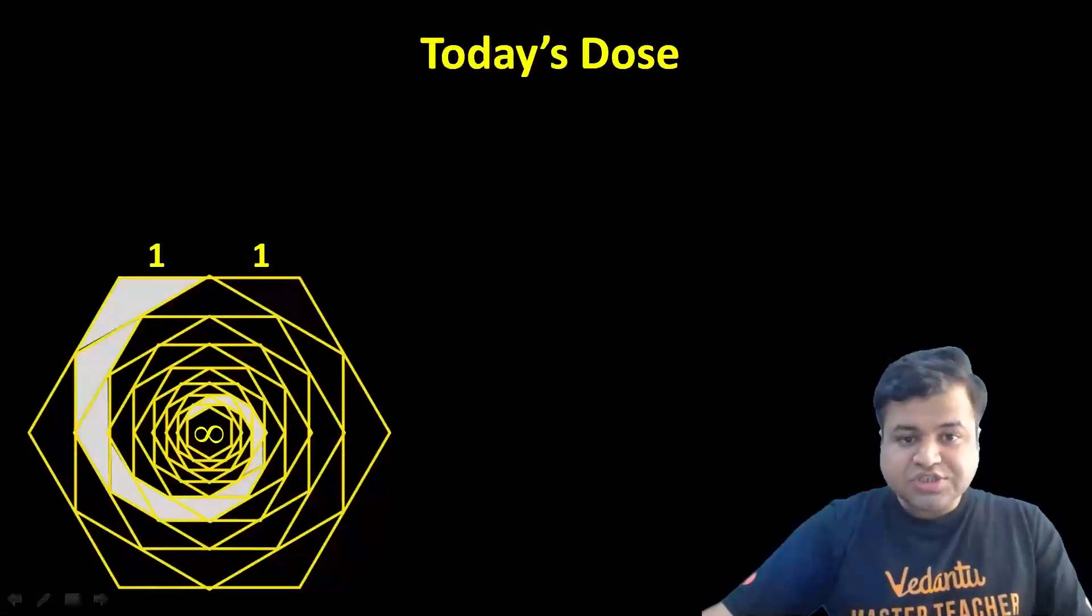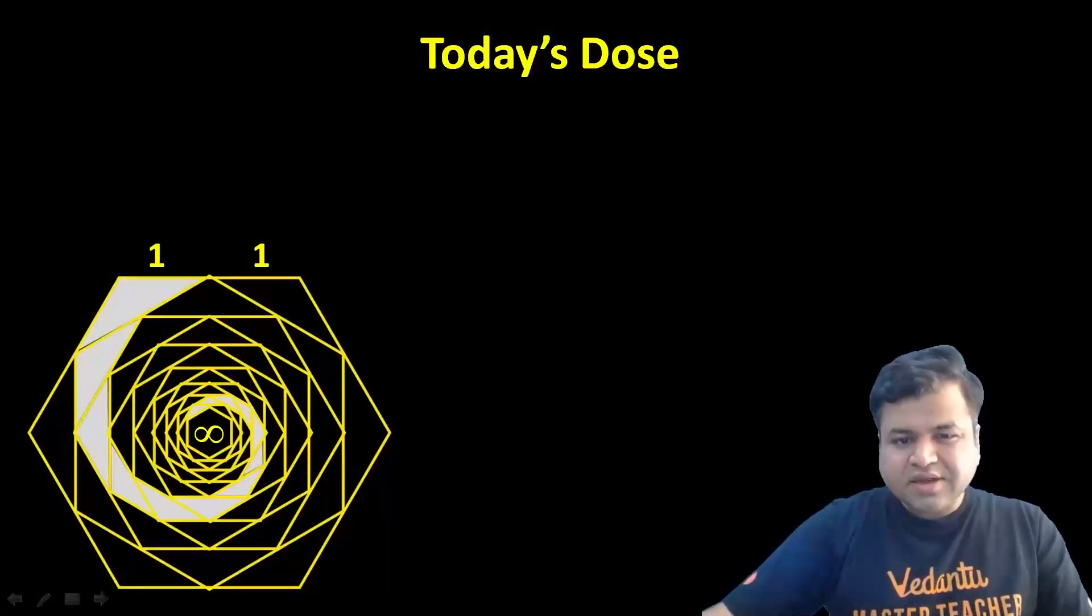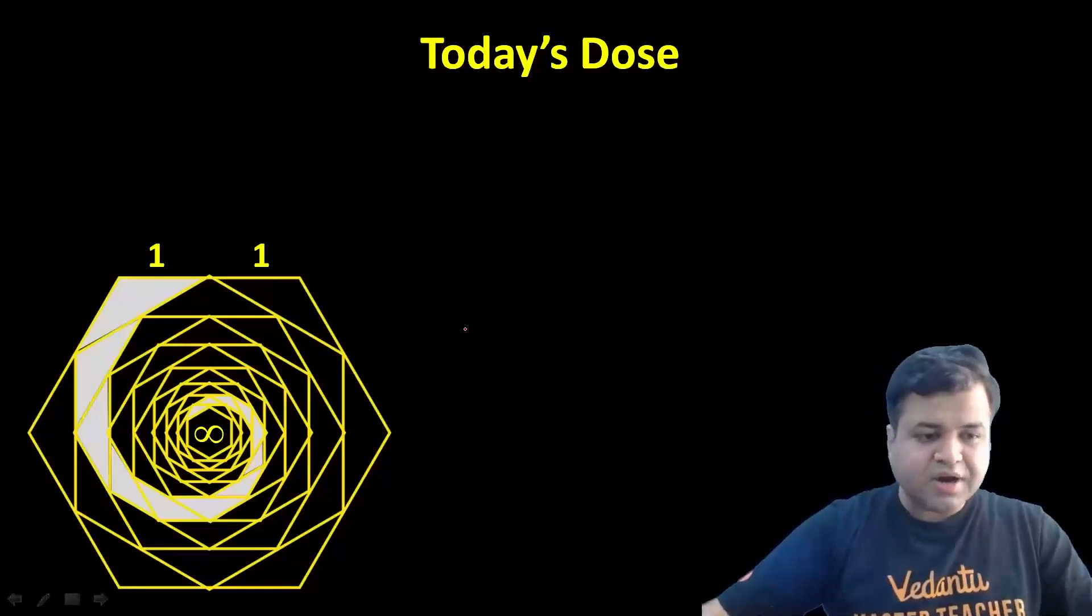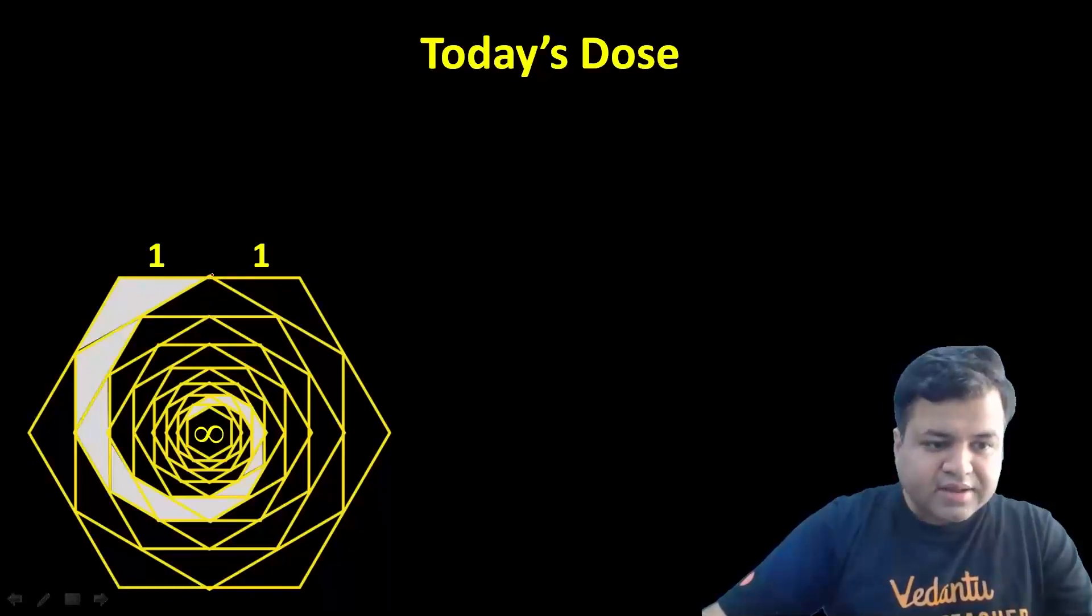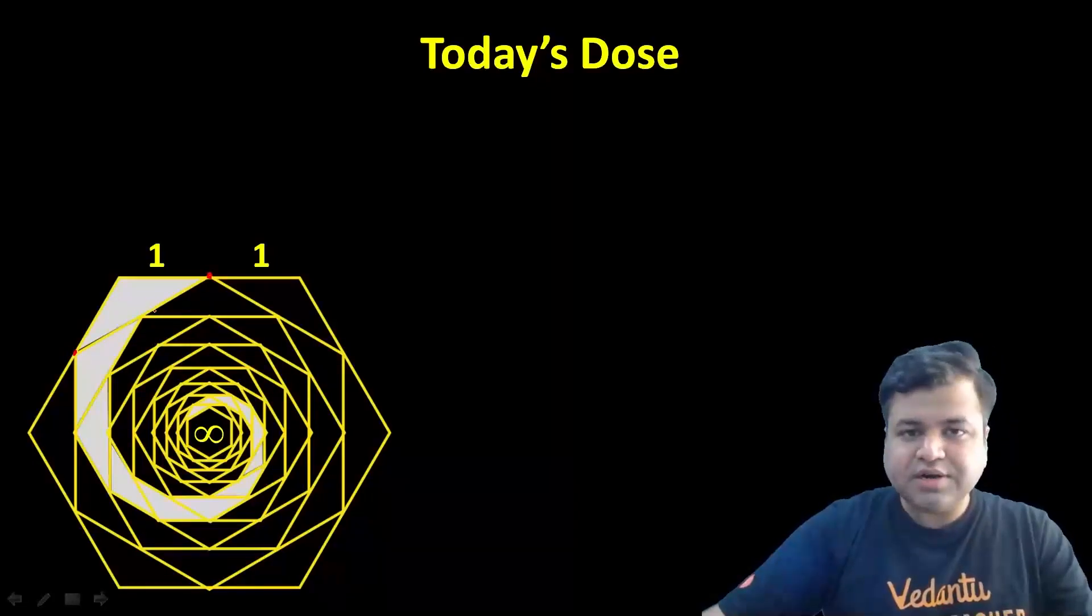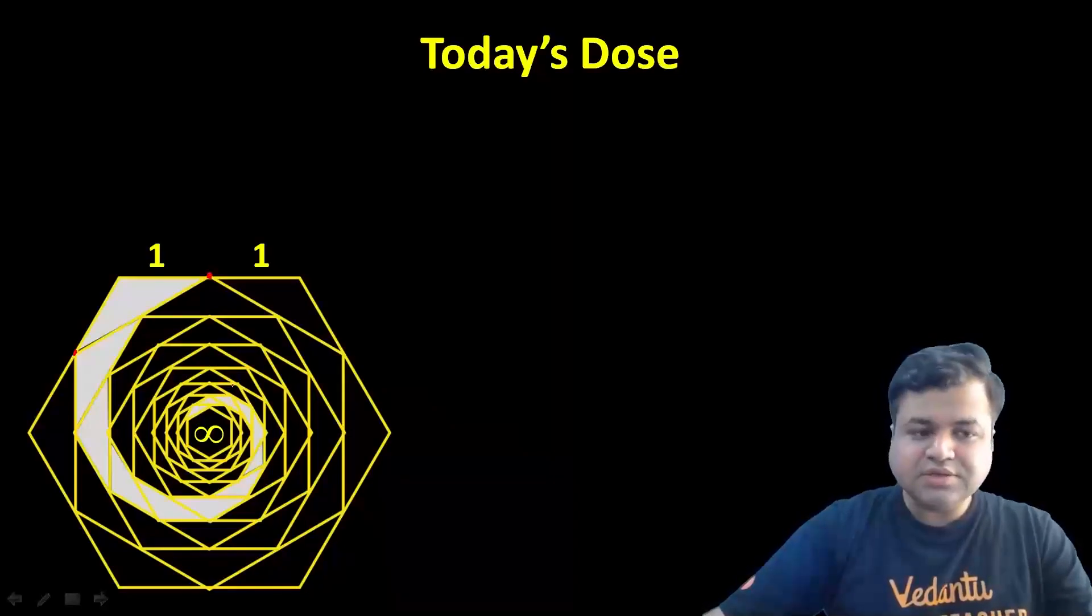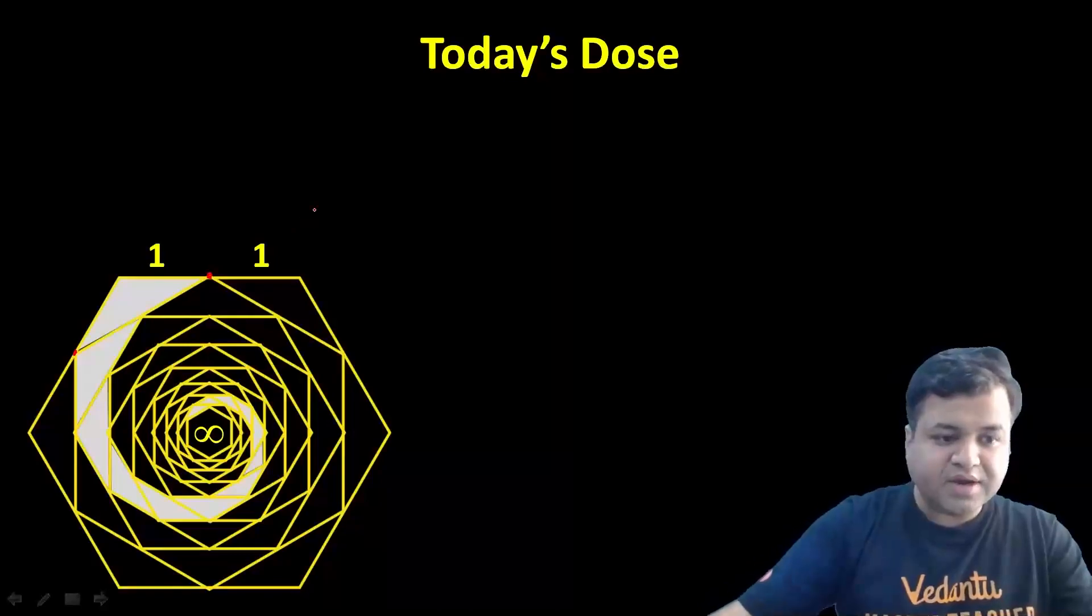This question involves an infinite hexagonal strip where we need to find the shaded area. The biggest hexagon has a side of 2 units. Its midpoint is connected with the midpoint of the adjacent side, creating some shaded portion. This process continues infinitely, and we actually need to find the white shaded area.